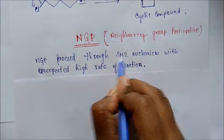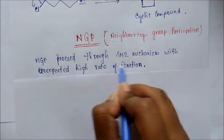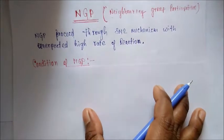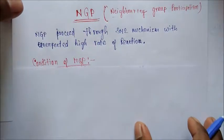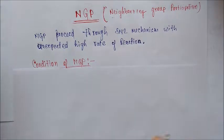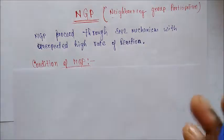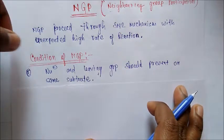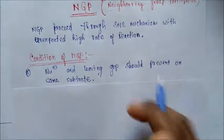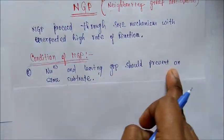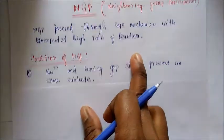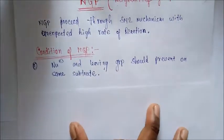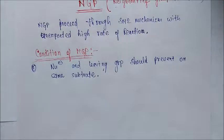The rate of NGP reactions is much higher than that of normal SN2 mechanisms. Regarding the conditions for NGP: first, the internal nucleophile and leaving group must both be present on the same substrate — just like in intramolecular SN2. So NGP is a part of intramolecular SN2 mechanism.